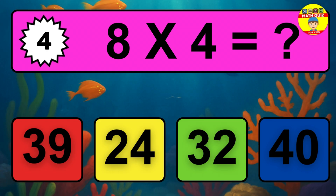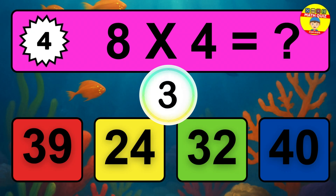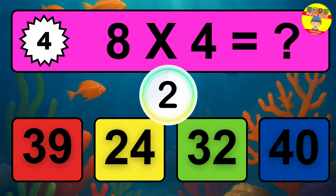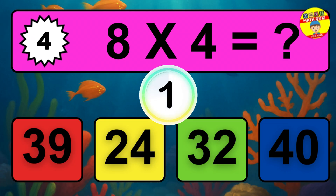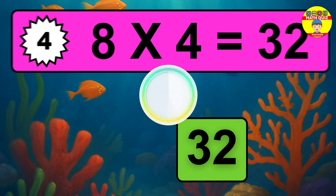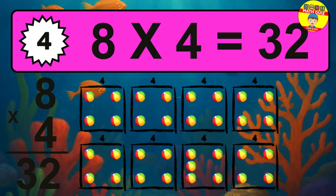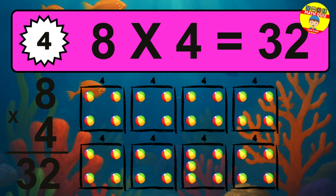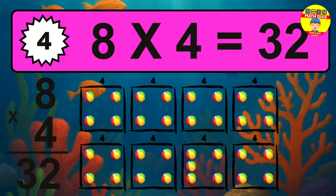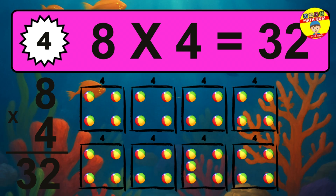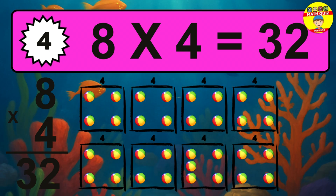Question 4. 8 times 4 equals what? The answer is 8 times 4 is 32. To calculate, we have 8 groups with 4 balls each one. So, how many balls do we have? 32 balls.